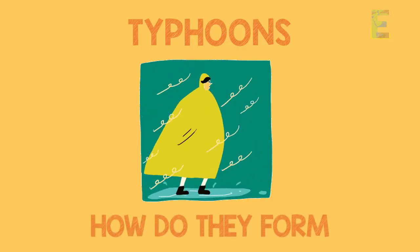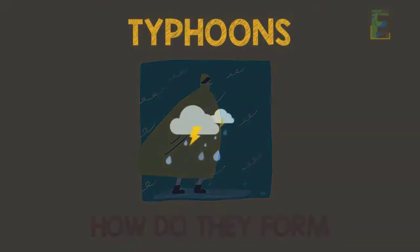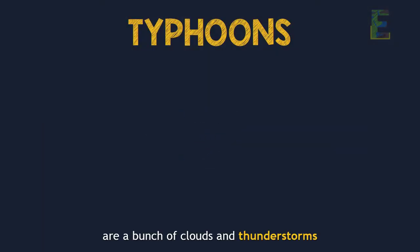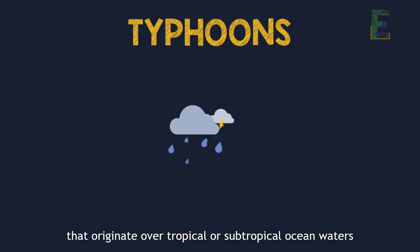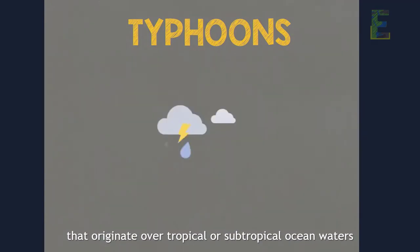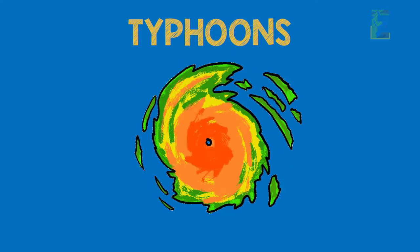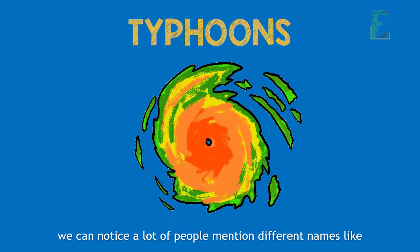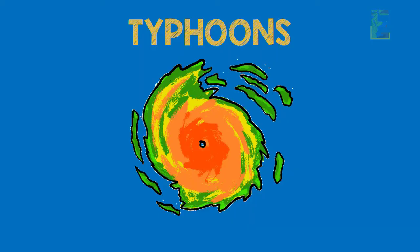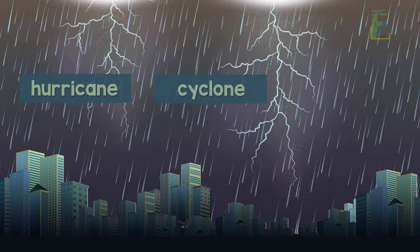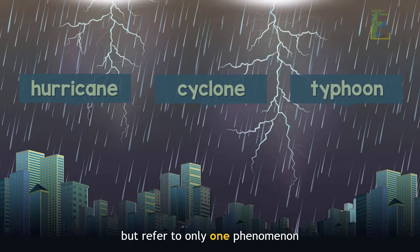So what are typhoons? Typhoons are a bunch of clouds and thunderstorms that originate over tropical or subtropical ocean waters forming a closed circulation. A lot of people mention different names like hurricane, tropical cyclone and typhoon, but these refer to only one phenomenon that differs based on its location.